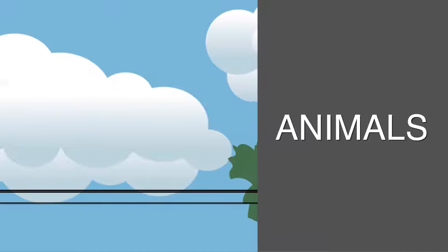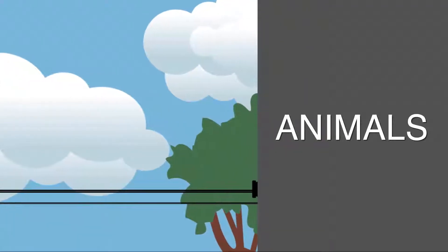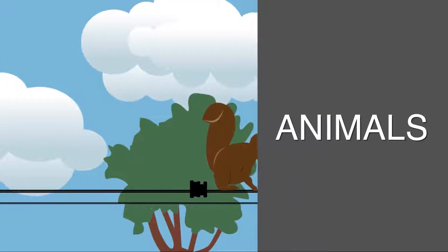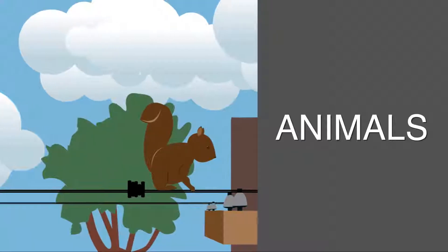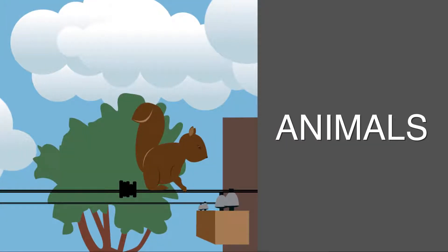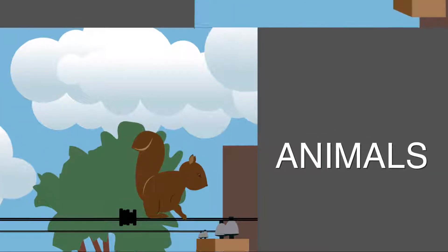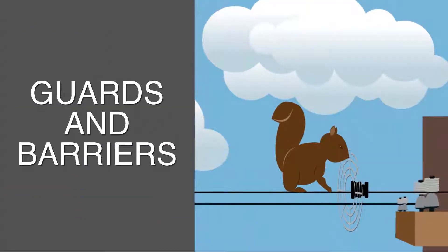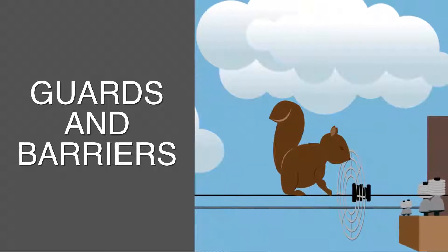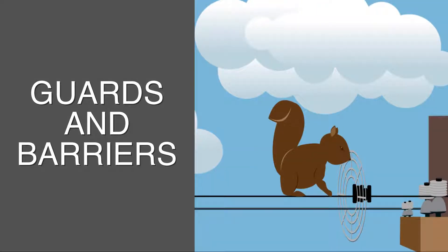Animals, especially squirrels, can cause power to fail when they come in contact with specific parts of the electrical system. When a critter contacts this equipment, it creates an abnormal current which can disrupt the flow of power. However, your electric co-op installs guards and barriers to protect sensitive equipment, but sometimes critters find a way in.